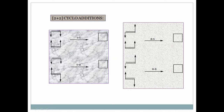In supra-supra cycloaddition, both molecules use the same face at both termini. The ethylene molecule has two termini and both use the same face, so this is supra. The other ethylene molecule's left and right termini also both use the same face — that is why we call it supra-supra. In supra-antara cycloaddition, one component's termini use one face, while the other component's left terminus uses the top face and right terminus uses the bottom face.